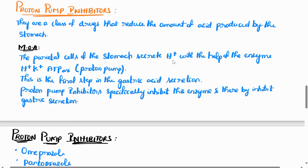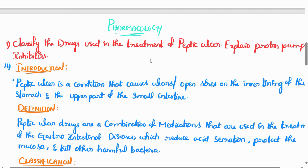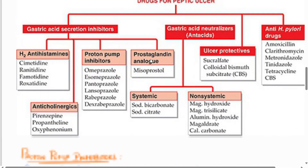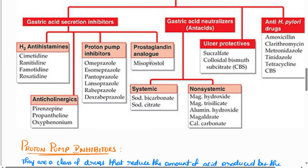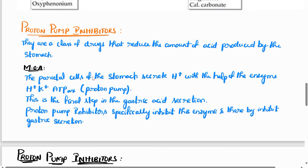That covers the overall classification. Now, the question specifically asks us to explain proton pump inhibitors. Proton pump inhibitors are a class of drugs that reduce the amount of acid produced by the stomach.